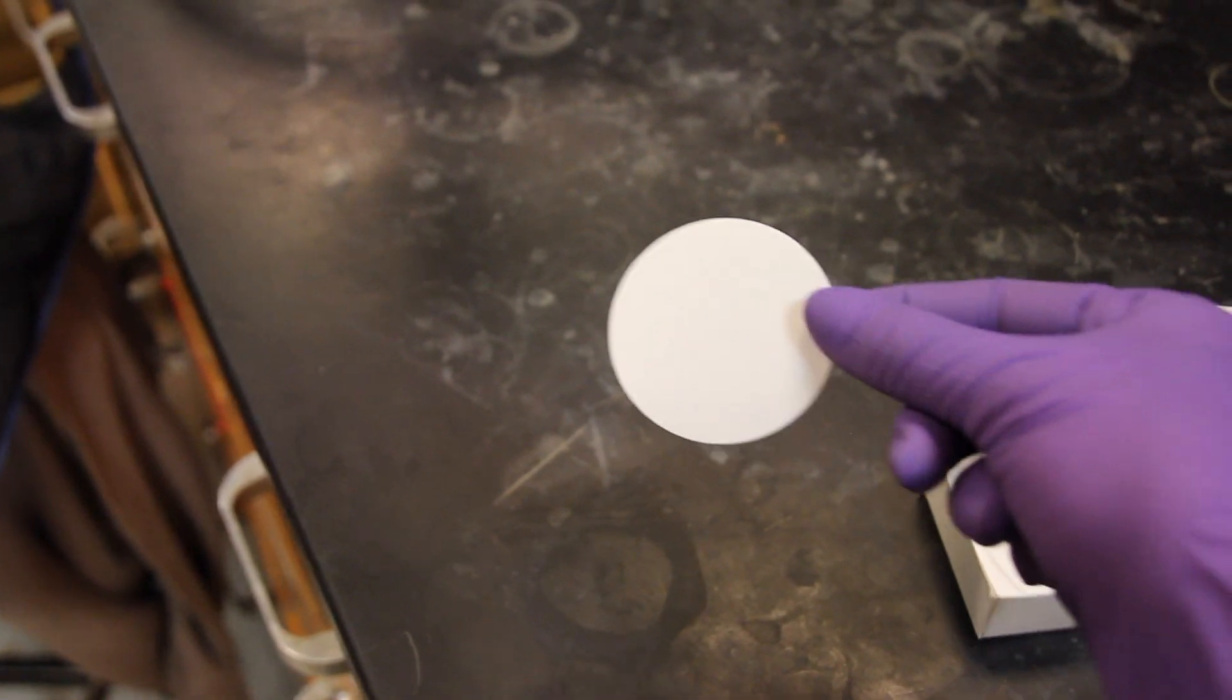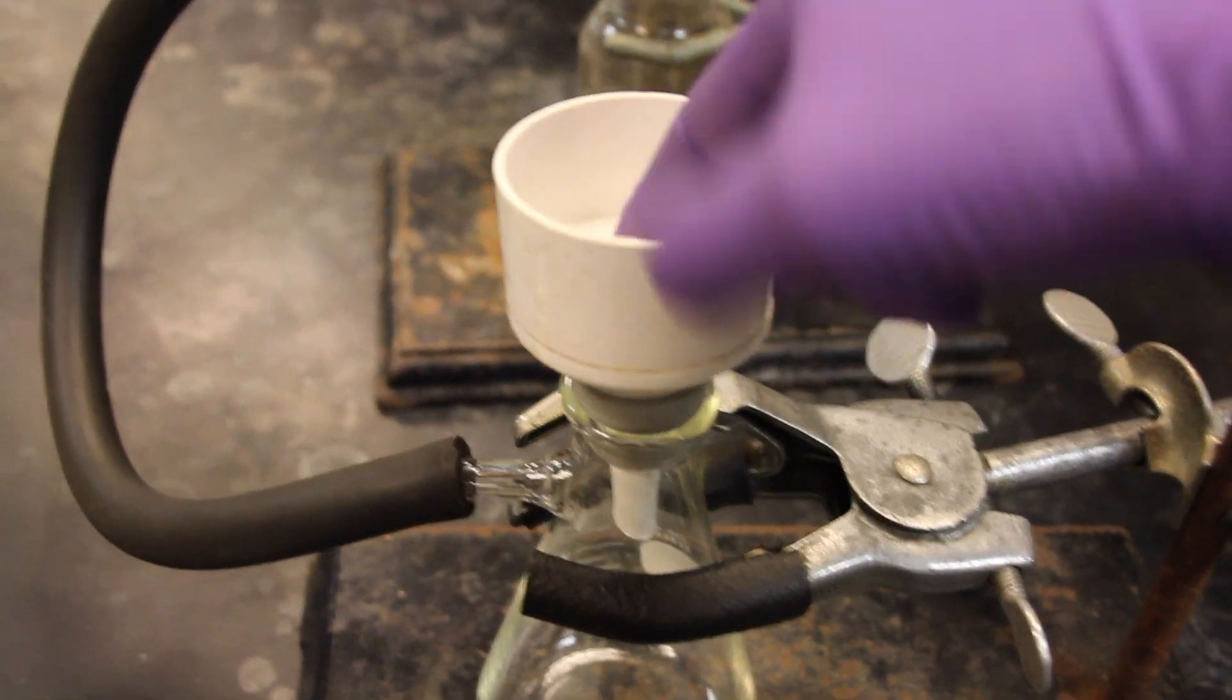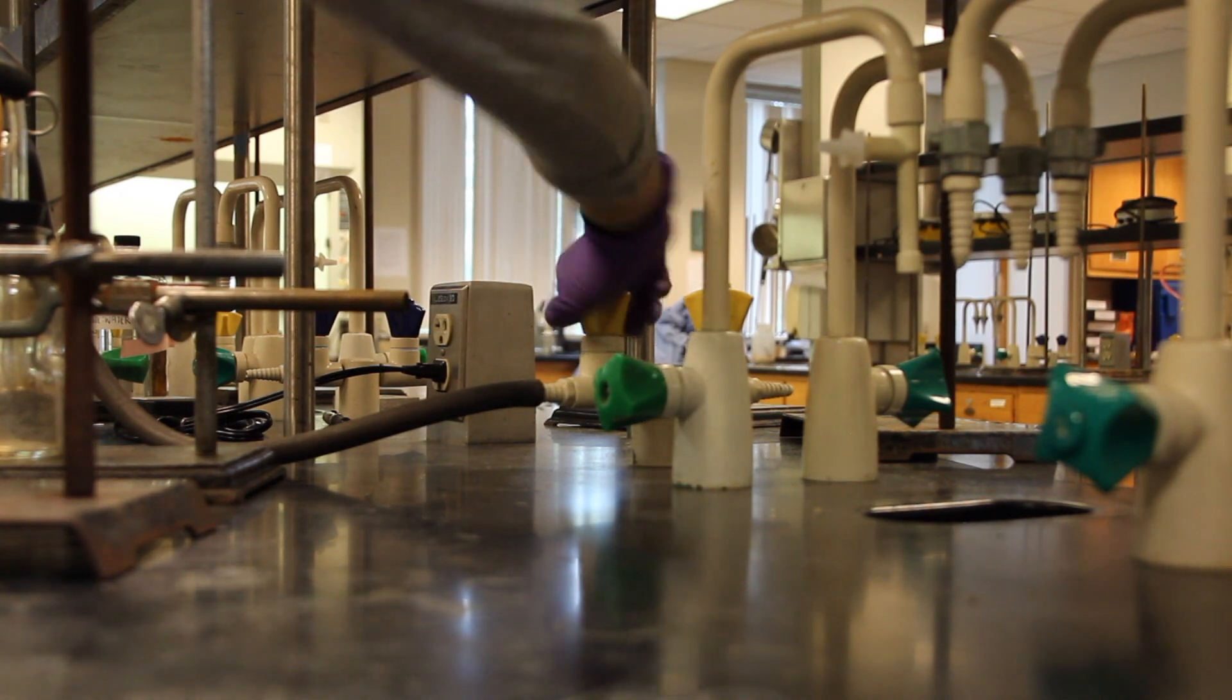Next, filter paper is placed into the Buechner funnel to catch the solid product. Once the vacuum is turned on, you are ready to recrystallize.